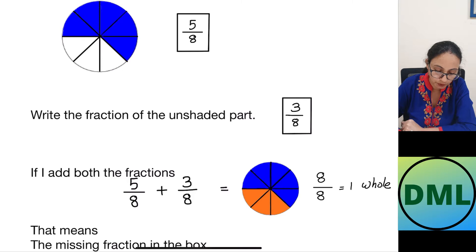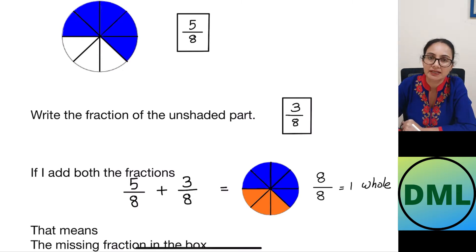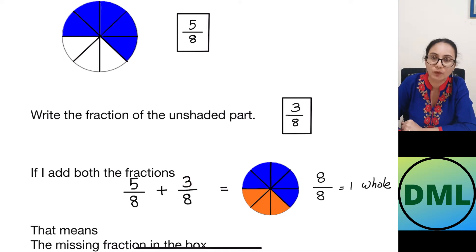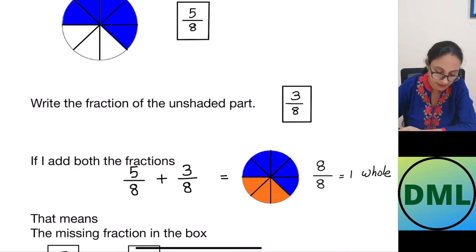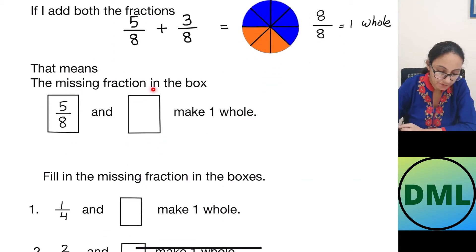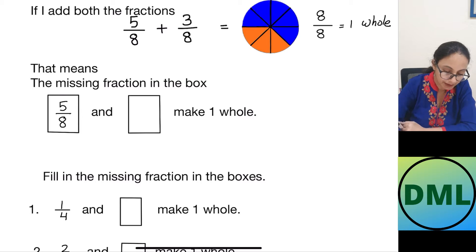What you have to do is subtract 8 minus 5. So 8 minus 5 is 3, so that means it will be 3 over 8. If you add 3 over 8 to 5 by 8 you will get 1 complete whole. That means the missing fraction in the box is 3 by 8.